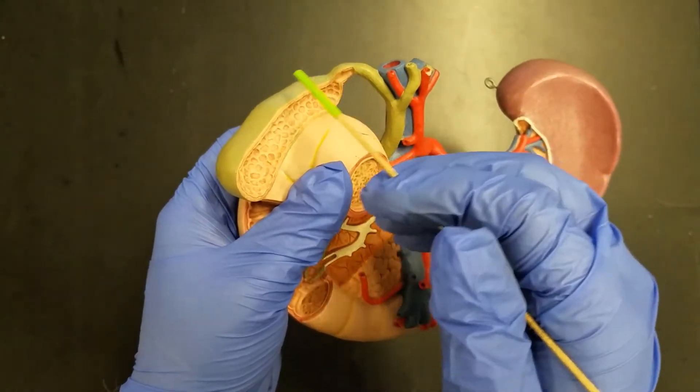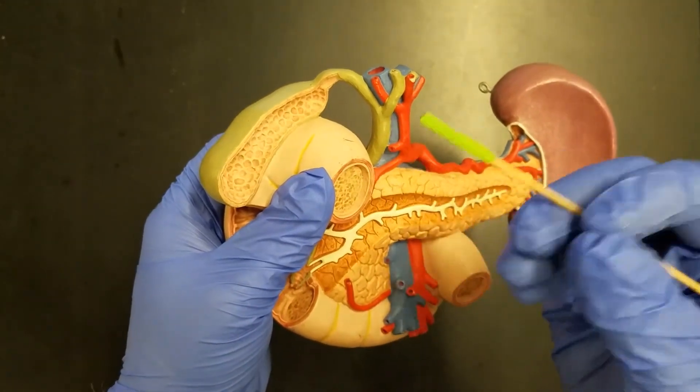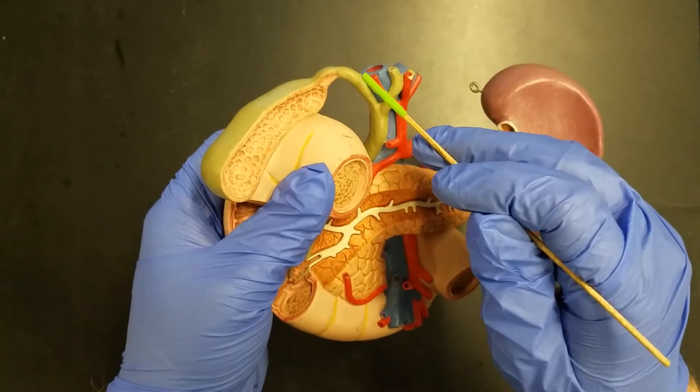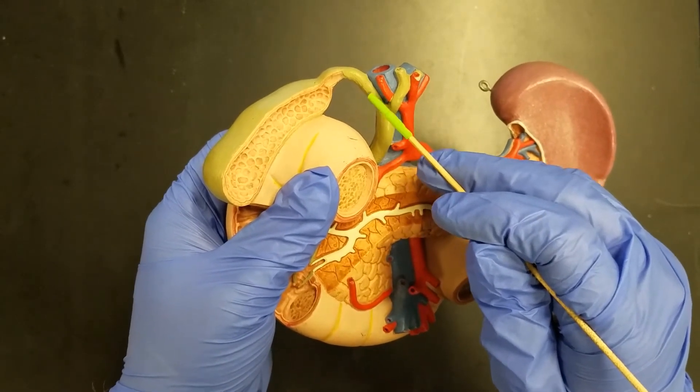When we have our gallbladders removed, that procedure is called a cholecystectomy. Ectomy means cutting, the cyst part of it refers to the cystic duct. Essentially you go in and you cut the cystic duct and seal it shut.